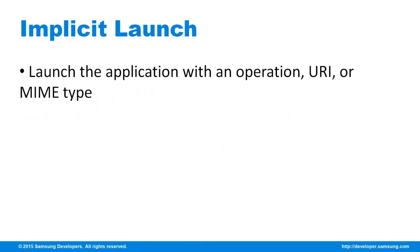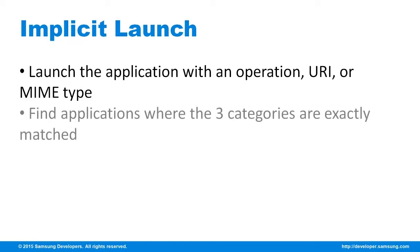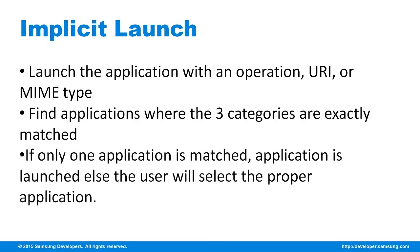Here you would need to pass on the operation, URI, MIME type, or all three. The purpose of this is to choose eligible apps to handle the request. All parameters must match. In the case of a single match, the app is launched automatically; otherwise, the user is prompted to select the preferred application.